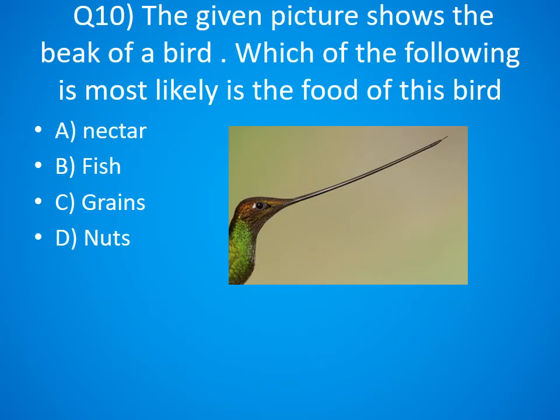Question 10. The given picture shows the beak of a bird. Which of the following is most likely the food of this bird? A. Nectar, B. Fish, C. Grains, D. Nuts.